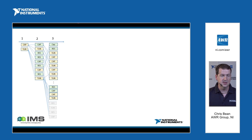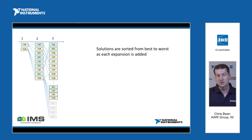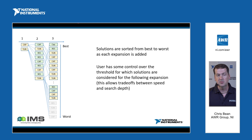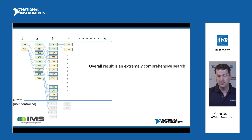To illustrate the topology search: after each stage, we sort the solutions from best to worst, and the user is given some control over the threshold for which solutions are passed into the next expansion stage. That allows some trade-offs between speed and search depth. You might want to do a quick search at the beginning to quantify what's possible and what design targets are achievable, then go back and do a more exhaustive search to make sure you're getting the best answers. We expand the solution up to N stages, where N is the maximum number of matching network sections specified by the user.